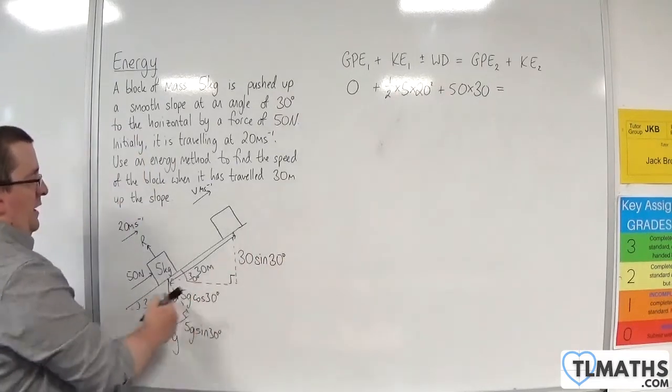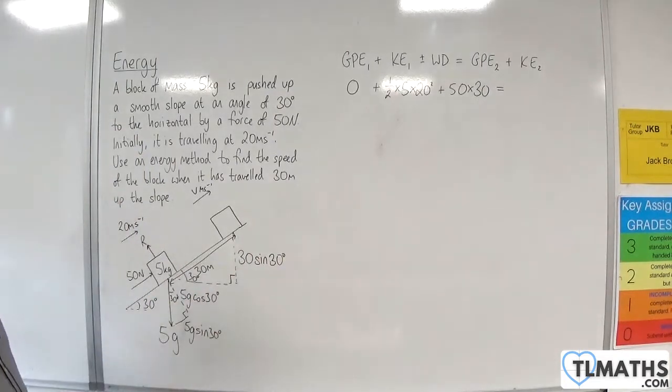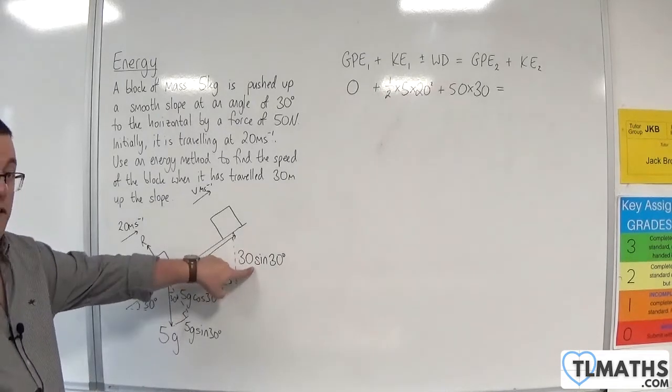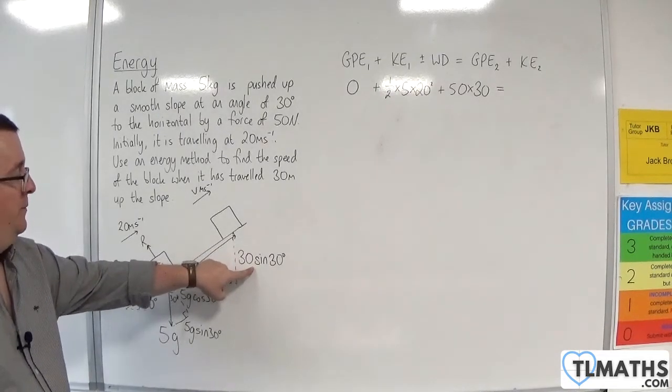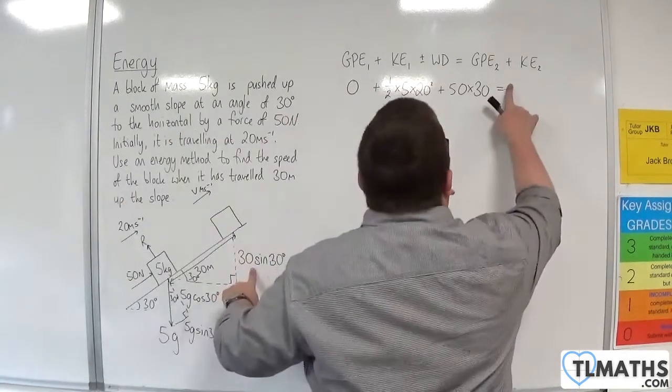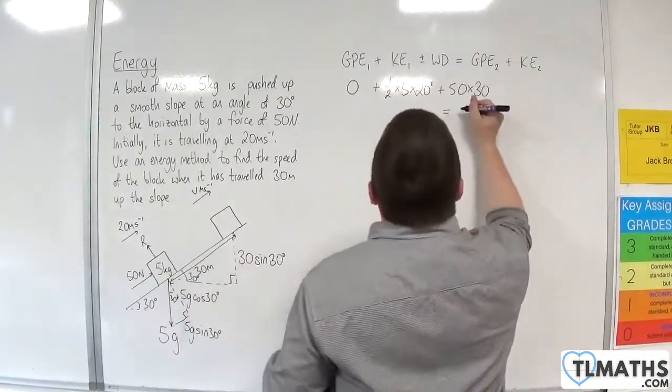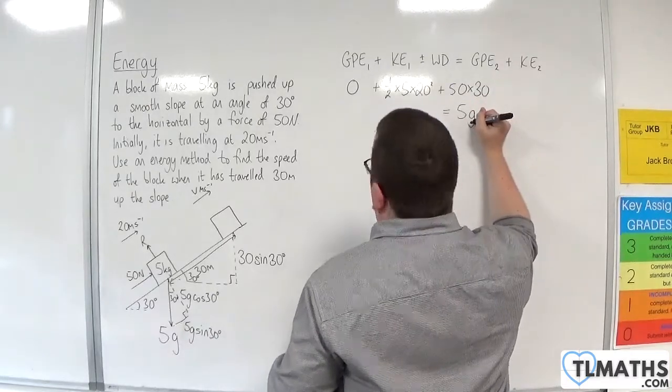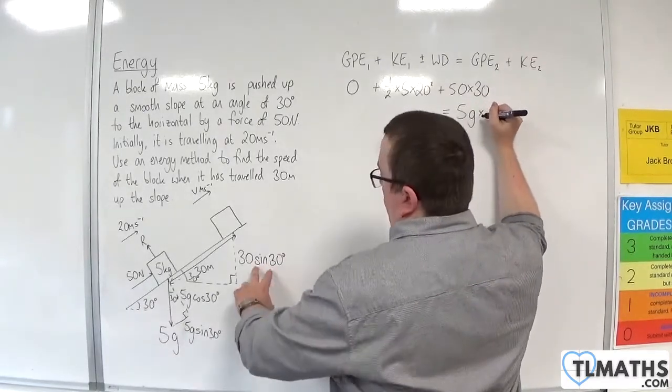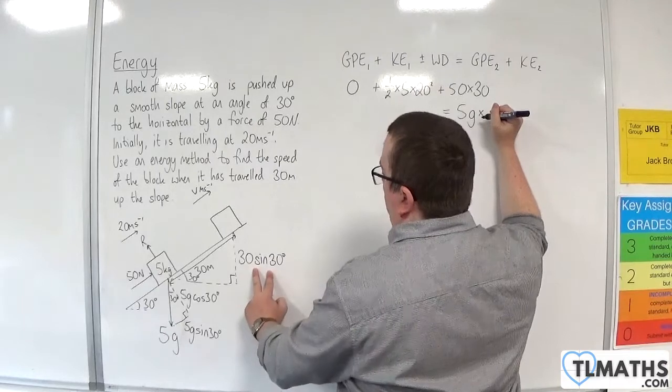And that, of course, will be 30 cosine 30, but we're not interested in that. I'm interested in the height, the vertical height that it has traveled. So the final gravitational potential energy will be M, which is 5, G times H, which is the 30 sine 30.